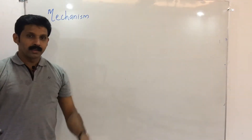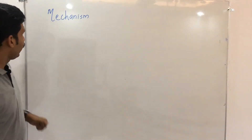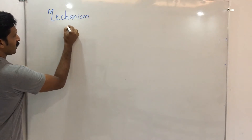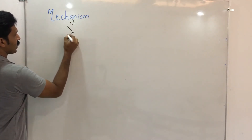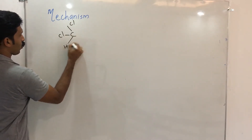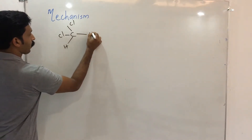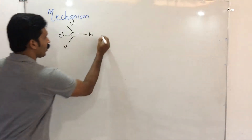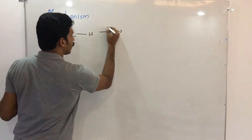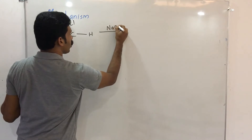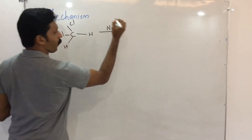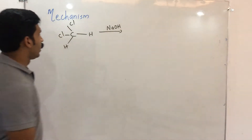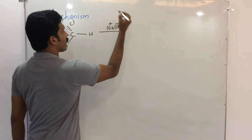Let's talk about the mechanism. First stage: chloroform reacts with NaOH. NaOH removes a hydrogen from chloroform. This gives a carbanion intermediate — CCl3 with a negative charge and two electrons.